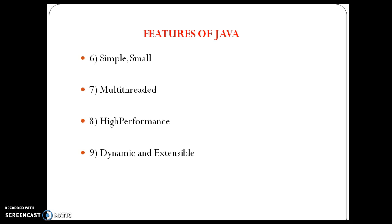The last feature is dynamic and extensible. Java is a dynamic language. At runtime, it can link with standard libraries, classes, objects, and methods. These are all the important features of Java.